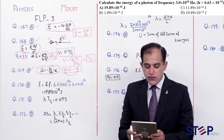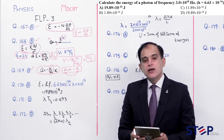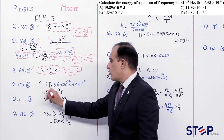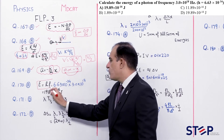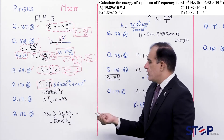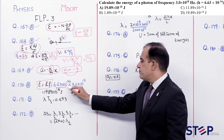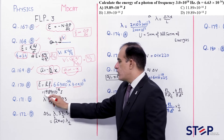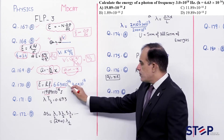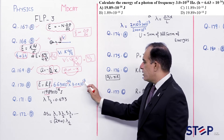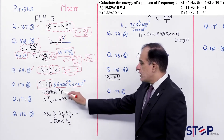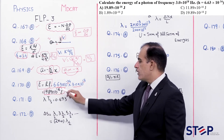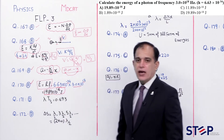Question number 170: Calculate energy of photon of given frequency. E = hf. h = 6.63×10⁻³⁴ J·s. Values lagate hain: 3 × 6.63 = 19.89. Powers: 10⁻³⁴ × 10¹⁸ = 10⁻¹⁶. Answer: 19.89×10⁻¹⁶ J. Correct option: Alpha.